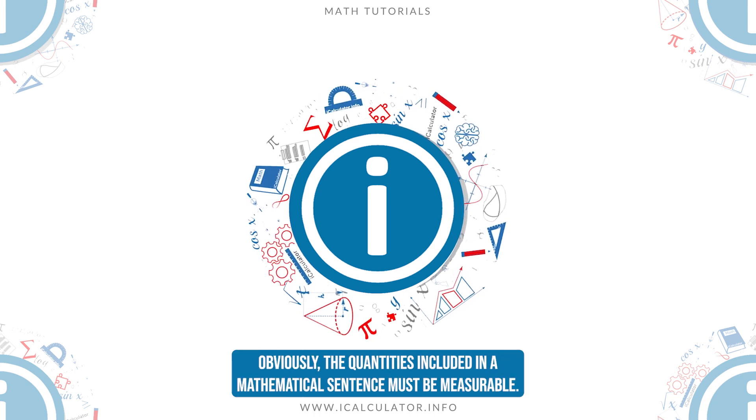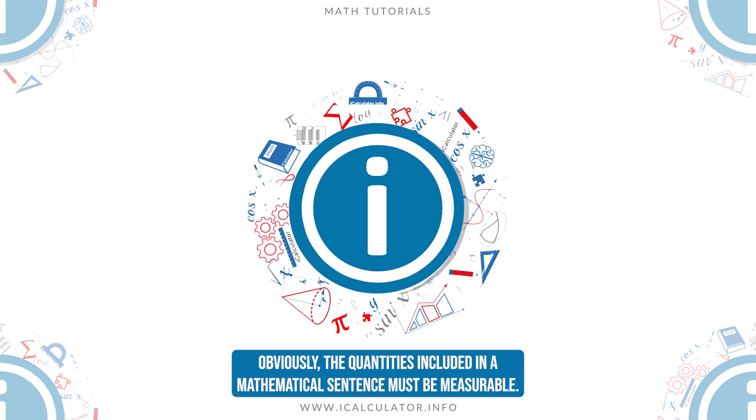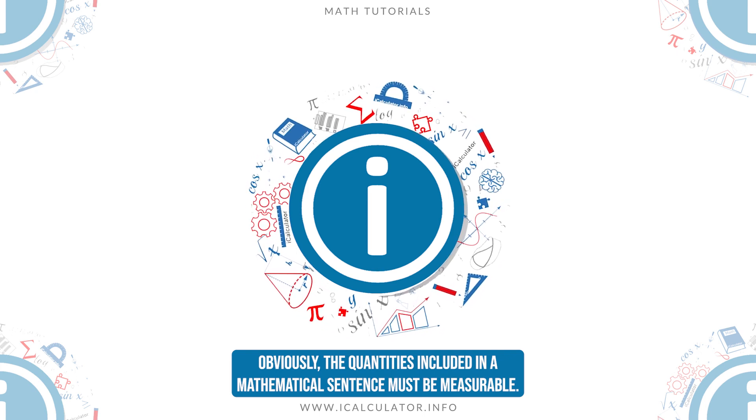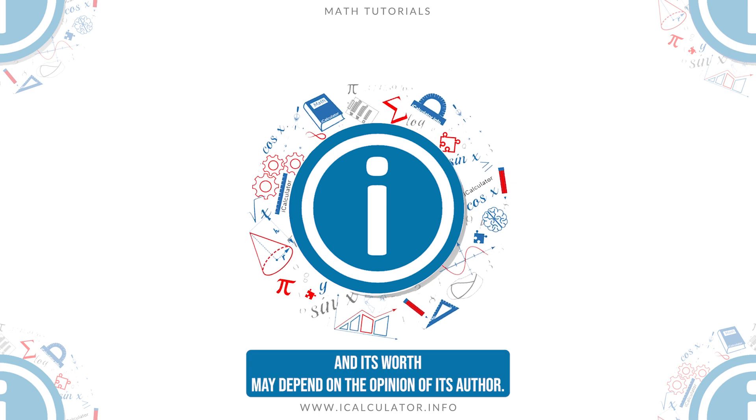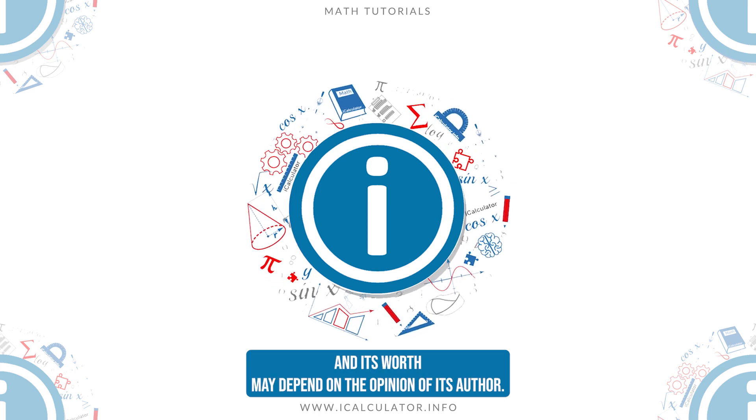Obviously, the quantities included in a mathematical sentence must be measurable. Otherwise the sentence may be subjective and its worth may depend on the opinion of its author.